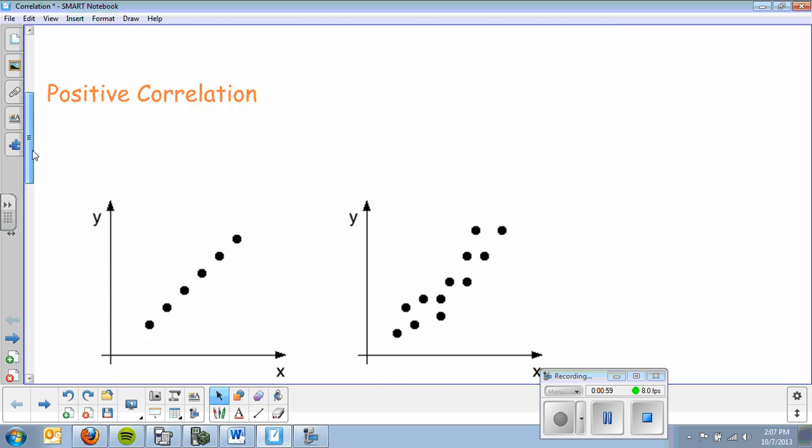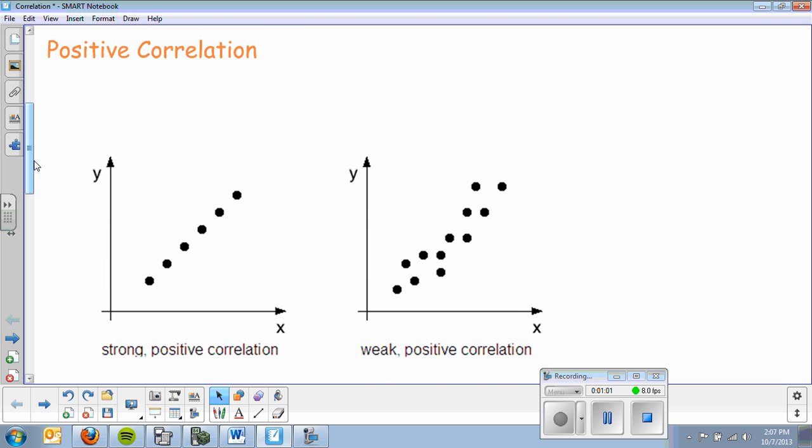We have two examples of positive correlation. In this first example, we have a strong positive correlation. I like to think about this as a rope. This is a perfect rope, a straight line, the strongest of all correlations. As that rope weakens, it becomes frayed and more spread out. That becomes a weaker positive correlation.